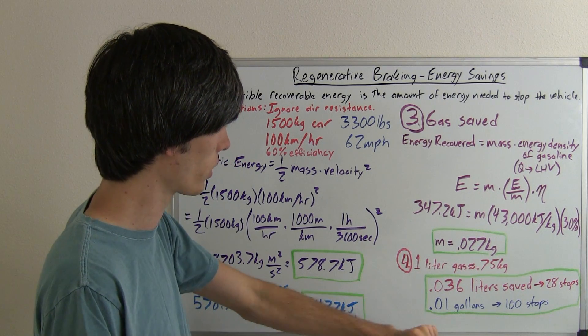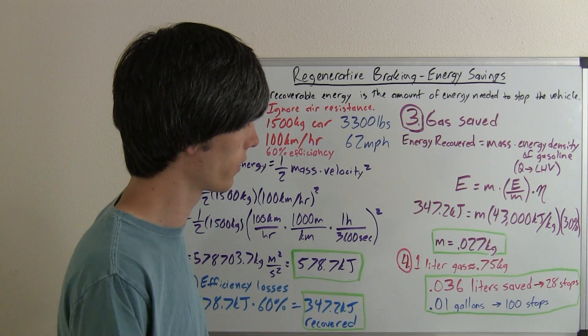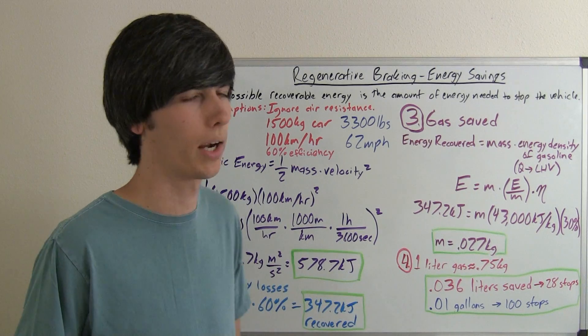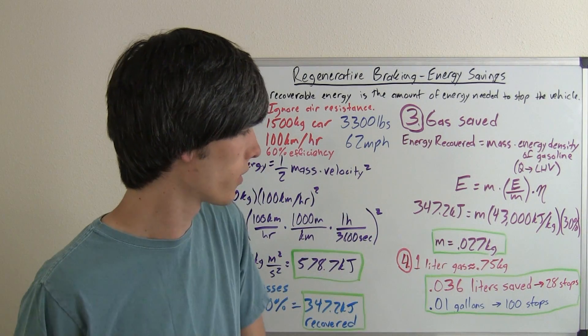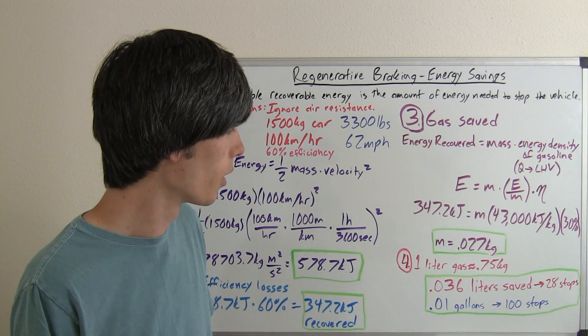So for those of you who don't understand metric units or want this in English units, we've got 0.01 gallons saved. So if you stop 100 times from 62 miles per hour with a 3,300-pound car and the other variables we discussed, then you will get back one full gallon of gasoline. Pretty cool.